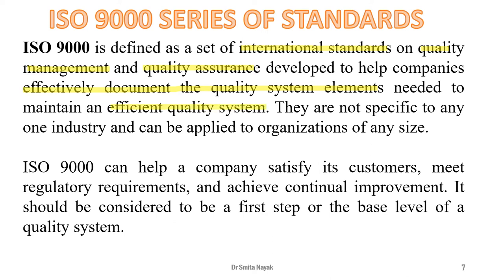ISO 9000 helps in strengthening the quality systems of any company. The series is not specific to any one industry and can be applied to organizations of any size, whether employing 10 or 10,000 employees. ISO 9000 can help a company satisfy its customers, meet regulatory requirements, and achieve continual improvement. It is considered the first step of a quality system.